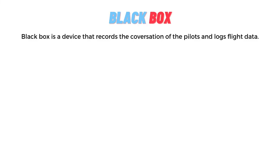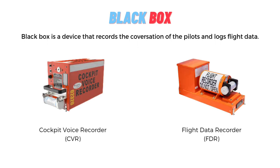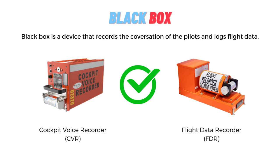A black box is a device that records the conversations of the pilots and logs flight data. In fact, there are two separate equipments: a CVR and an FDR. Both of them are mandatory for all commercial aircraft and corporate jets.